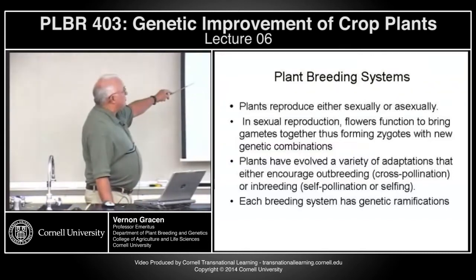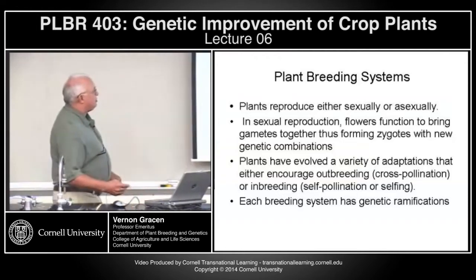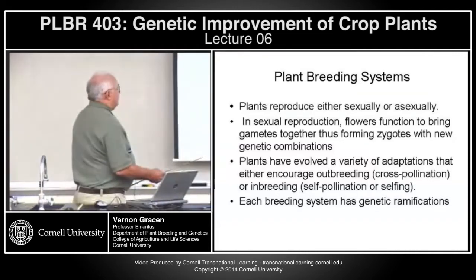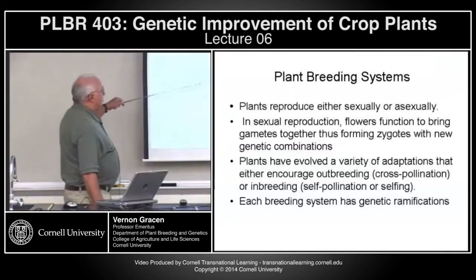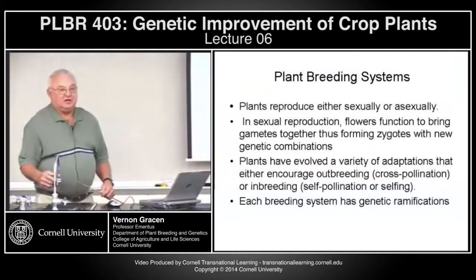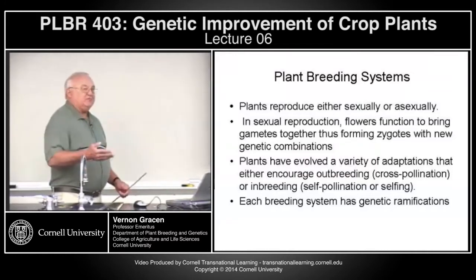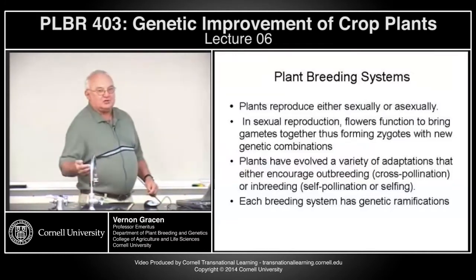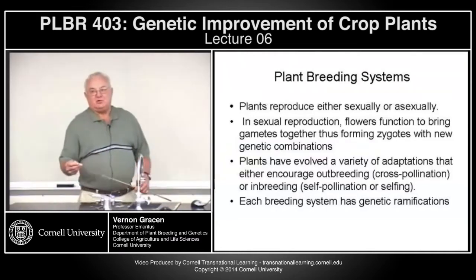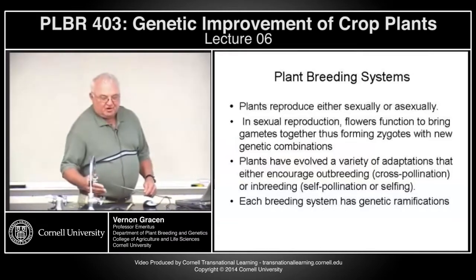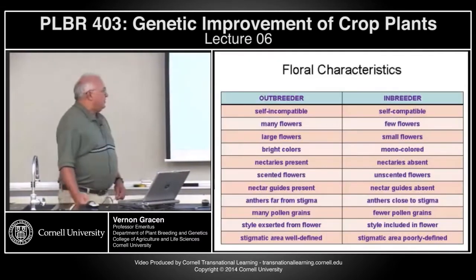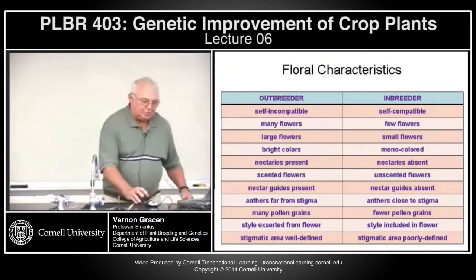During sexual reproduction, meiosis is where recombination occurs, and fertilization brings the embryos back to the 2N or diploid state. Recombination is the chief source of hereditary variation. Variation in chromosome numbers or polyploidy is another source, and mutations have been used, but probably contribute far less usable genetic variation to breeders than recombination or changes in ploidy levels.